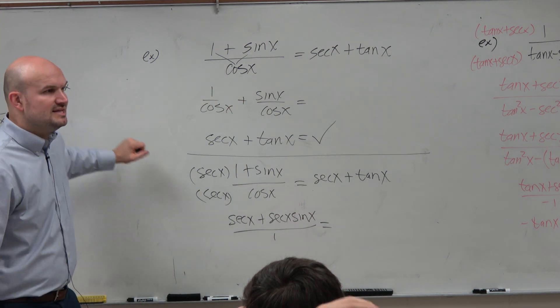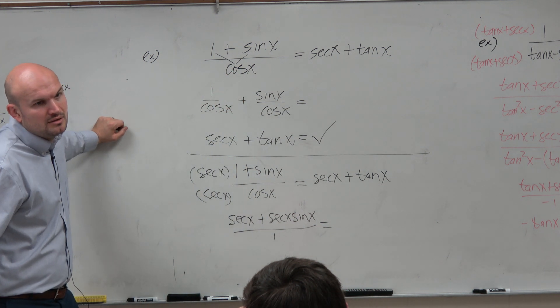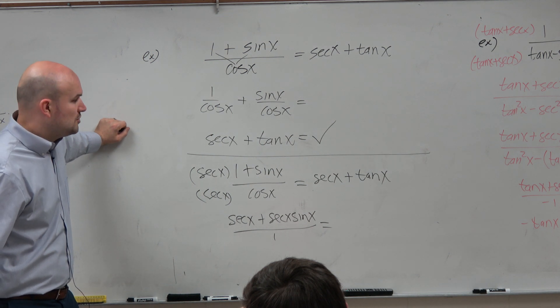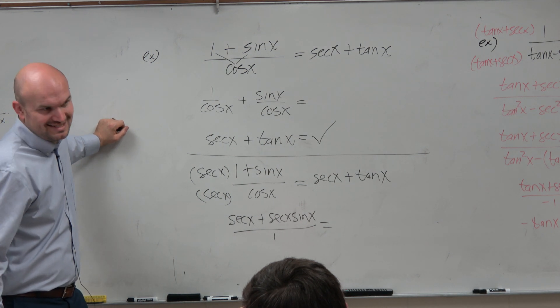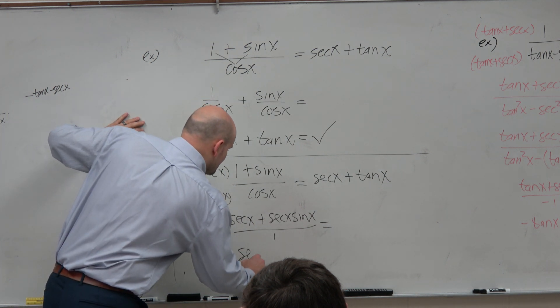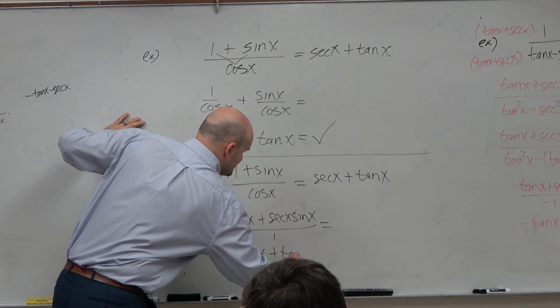And really, what is secant? Secant is really what? 1 over cosine. So 1 over cosine times sine is tangent, sine over cosine. So secant of x plus tangent of x.